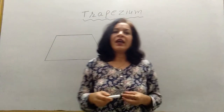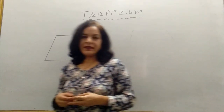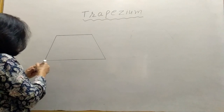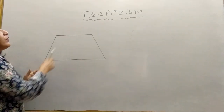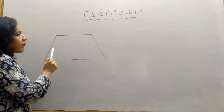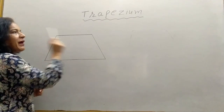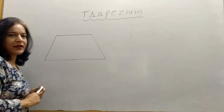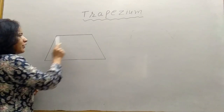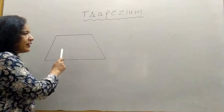Hello everyone. Our today's topic is Trapezium. Here I have drawn a figure. This is a polygon because it is a simple closed curve made by line segments. And this polygon is made by 1, 2, 3, 4 line segments. So it is a quadrilateral.